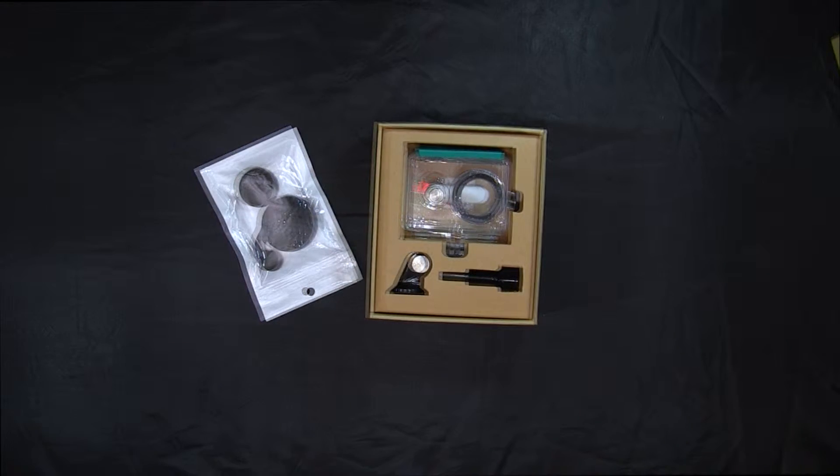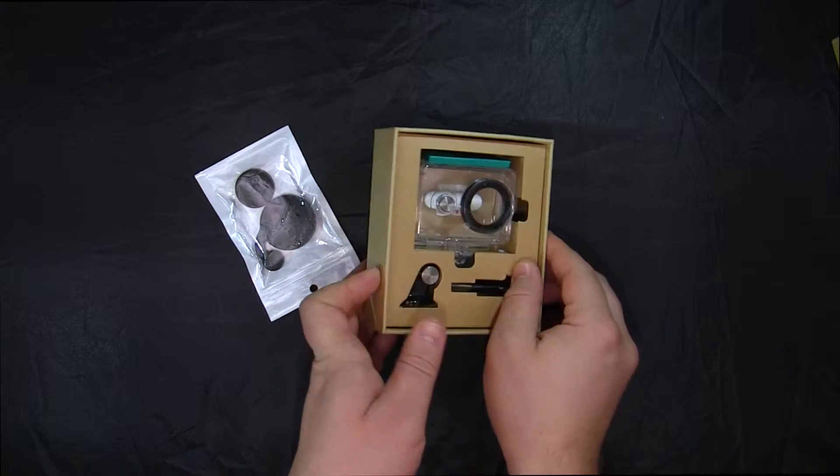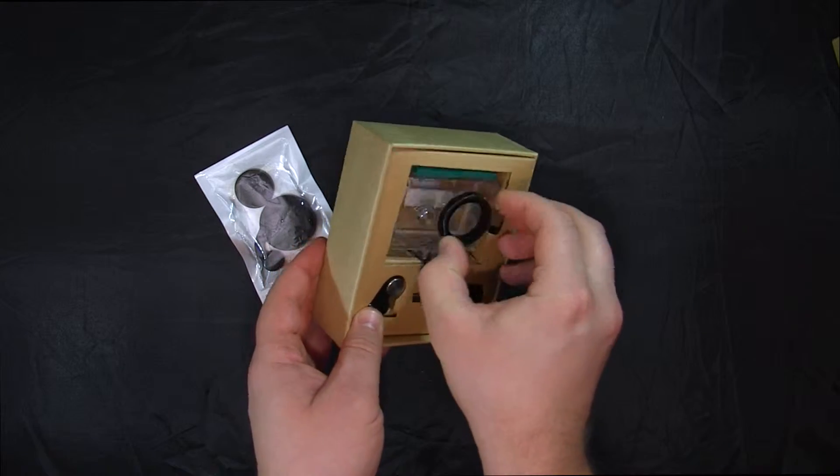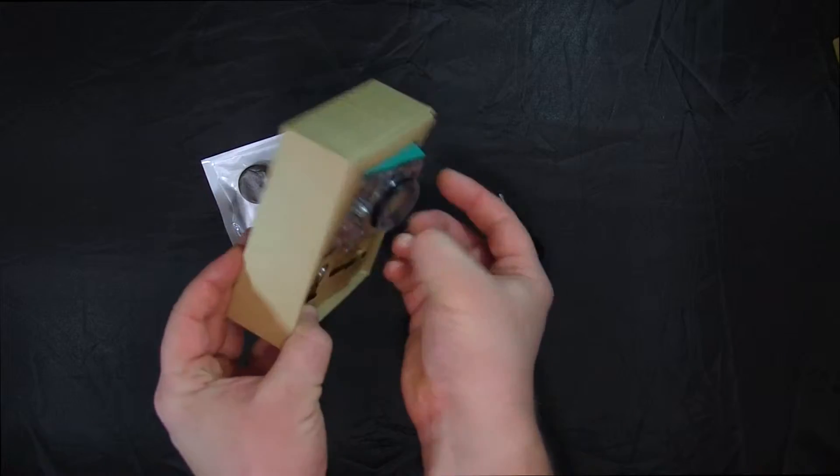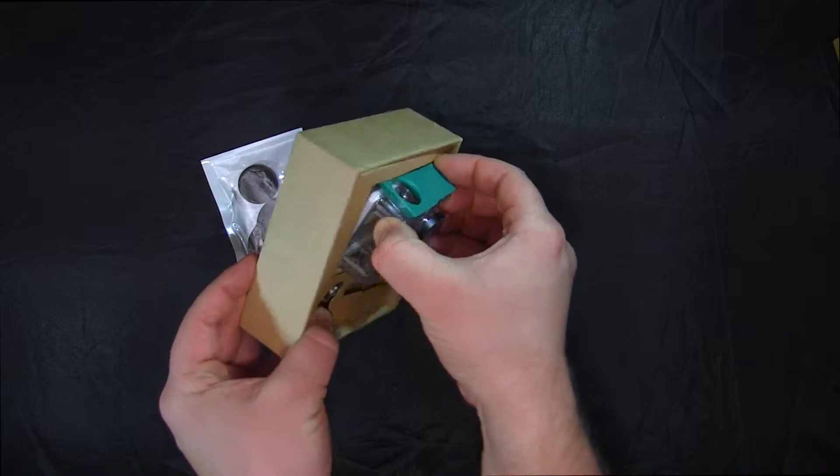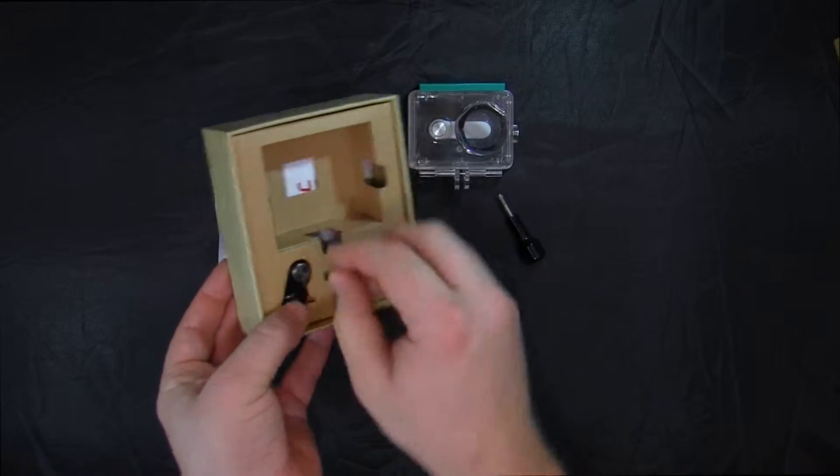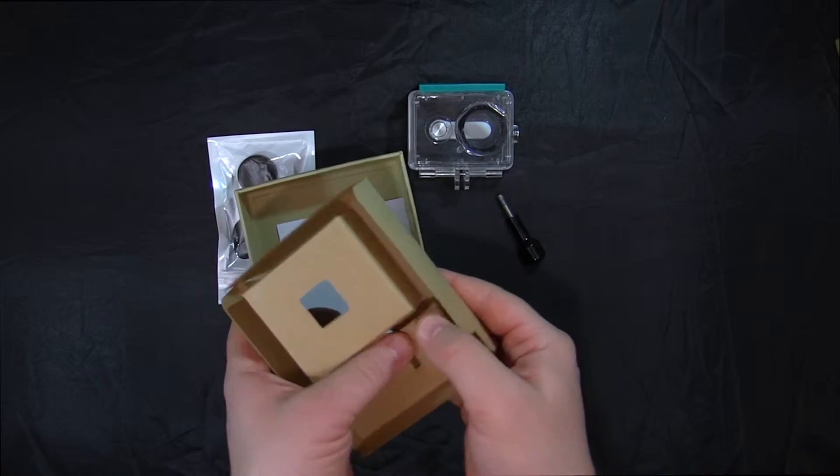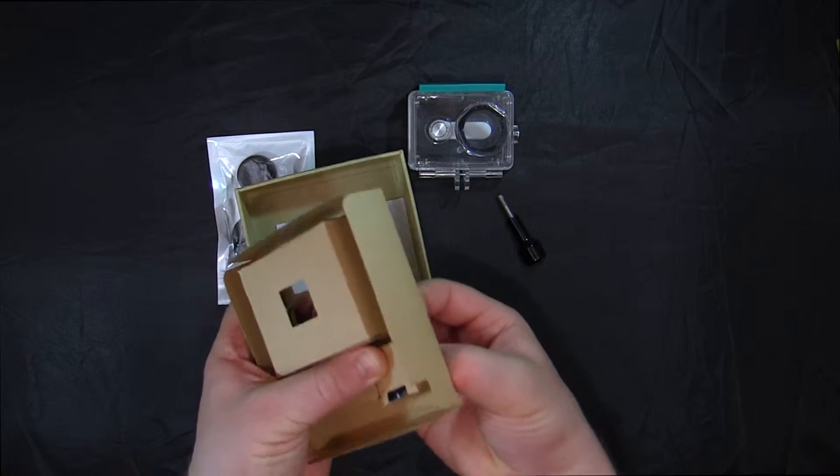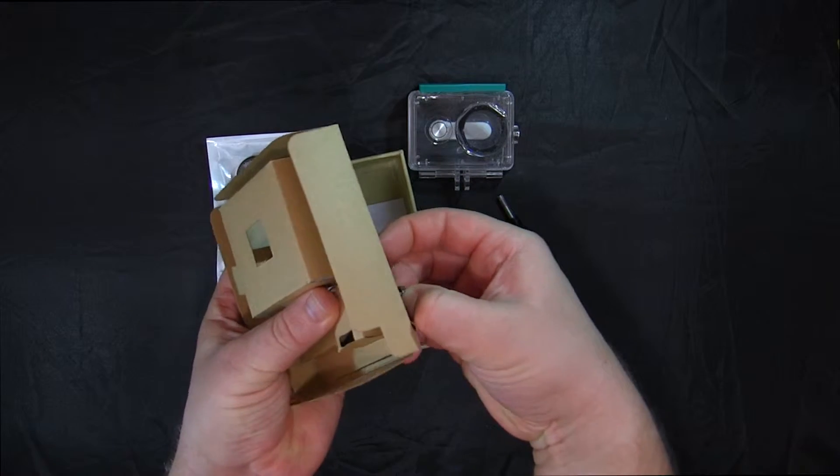Давайте посмотрим, что у нас входит в комплект с водонепроницаемым корпусом. Итак, мы получаем винт, сам водонепроницаемый корпус и крепление, с помощью которого вы можете прикрепить вашу камеру на штатив или монопод.